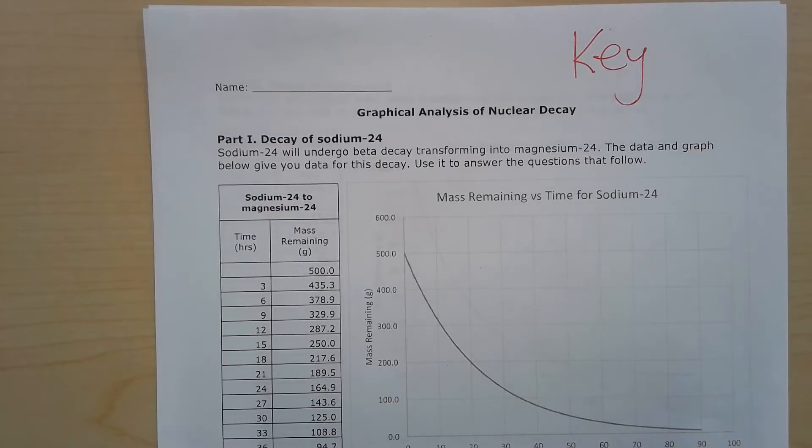Okay, let's go over this graphical analysis of nuclear decay practice. Part one says the decay of sodium-24 will undergo beta decay transforming into magnesium-24. The data and graph below give you data for this decay. Use it to answer the questions that follow.